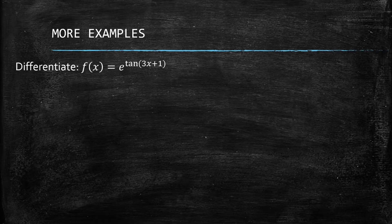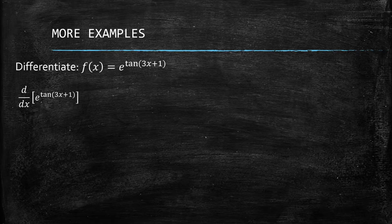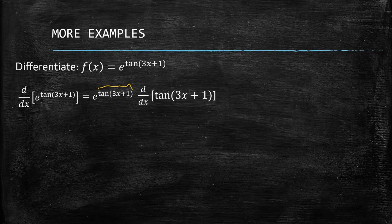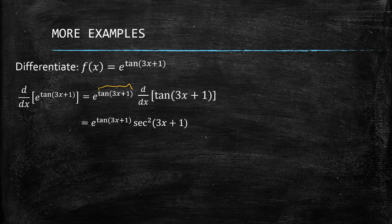What if we have e to the power of tangent of (3x + 1)? We get the derivative of e to the power of tangent(3x + 1), which is just e to the power of tangent(3x + 1). Don't forget to get the derivative of the exponent because of the chain rule — remember it's u · du/dx.